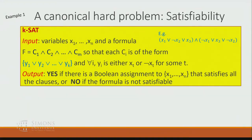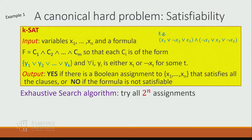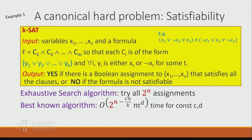One example hard problem is the k-SAT problem. We are given n variables and a CNF formula; the formula is the AND of m clauses, and each clause is the OR of k literals. Each literal is a variable or the negation of a variable. We need to output yes if there is a Boolean assignment that satisfies this formula, and no otherwise. The exhaustive search algorithm tries 2^n combinations of all assignments and runs in roughly 2^n time. The current best-known algorithm runs in 2^(n − c·n/k) · m^d time for some constants c and d. As k grows, this running time approaches 2^n — so essentially, there is no better than exhaustive search algorithm.